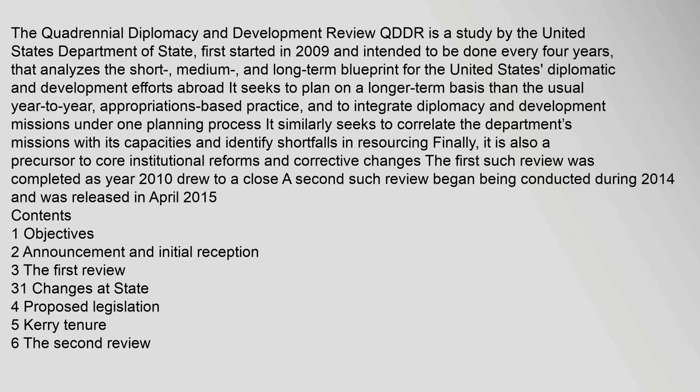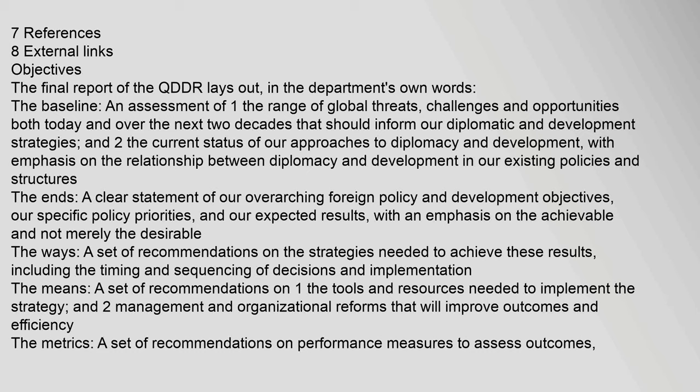The final report of the QDDR lays out, in the department's own words, the baseline: an assessment of the range of global threats, challenges and opportunities both today and over the next two decades that should inform diplomatic and development strategies, and the current status of approaches to diplomacy and development, with emphasis on the relationship between diplomacy and development in existing policies and structures. The ends: a clear statement of overarching foreign policy and development objectives, specific policy priorities, and expected results, with an emphasis on the achievable and not merely the desirable. The ways: a set of recommendations on the strategies needed to achieve these results, including the timing and sequencing of decisions and implementation.